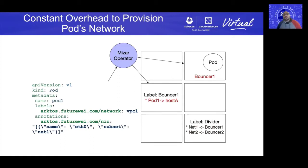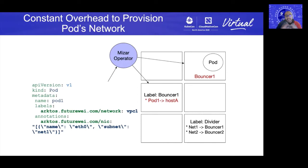When the user creates a pod within a multi-tenant network, we use annotations of the pod object to specify the VPC and the subnet of the pod. The Arctos controller adds the network and NIC annotations. The Mizar operator uses these annotations to provision the pod within the requested VPC and network boundary. The Mizar operator provisions the network resources with a constant number of RPC calls — typically two. The number of RPC calls does not depend on the number of worker nodes in the cluster or the pods already provisioned. This is what allows network provisioning to scale.